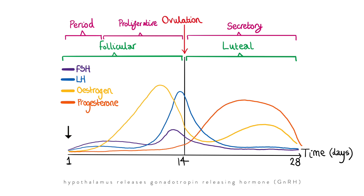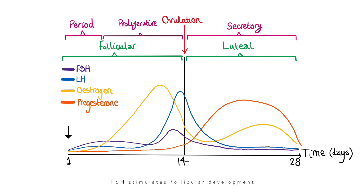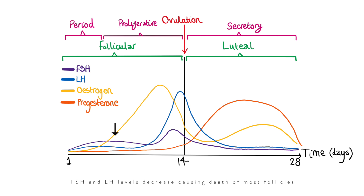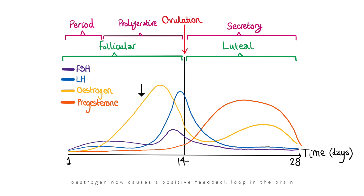For a summary of everything: on day one of the cycle, the hypothalamus releases GnRH, which acts on the anterior pituitary to cause the release of FSH and LH. These travel in the blood to the ovaries. FSH stimulates the development of follicles; LH stimulates the follicles to release estrogen. Estrogen levels rise, causing the stratum functionalis to proliferate and thicken, while also setting up a negative feedback loop — dampening FSH and LH release — which causes most follicles to die by atresia, but allows one dominant follicle to survive.